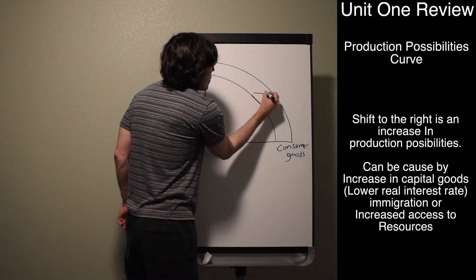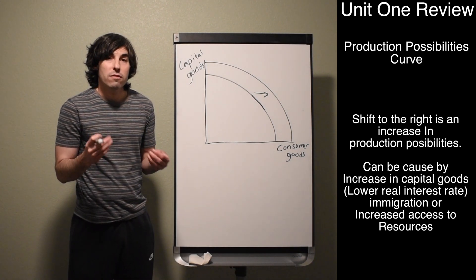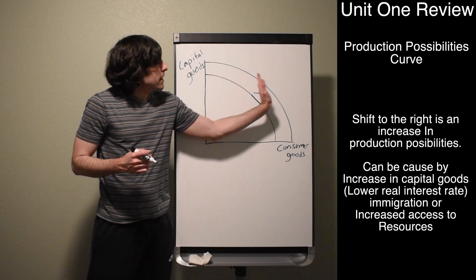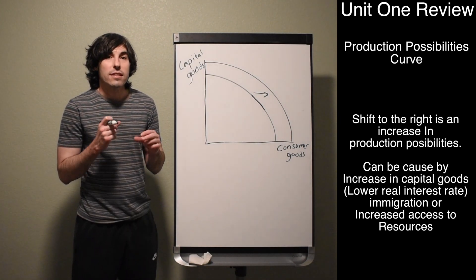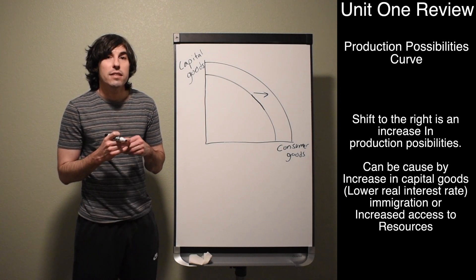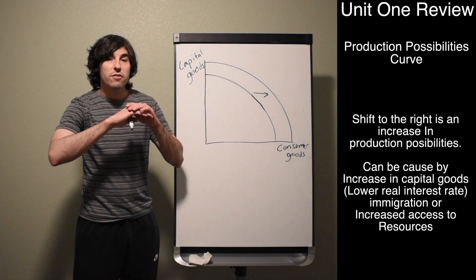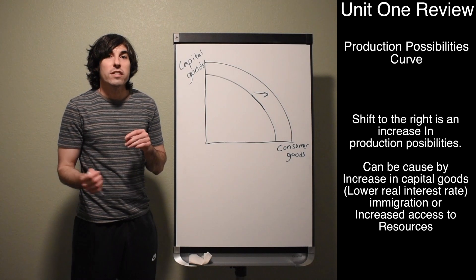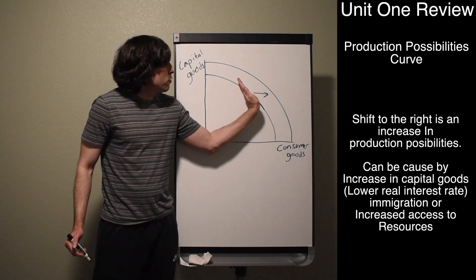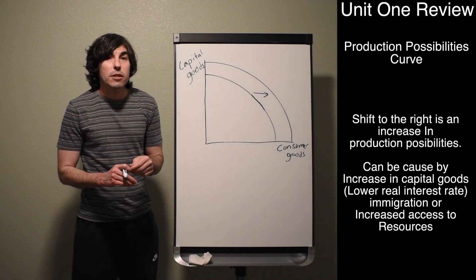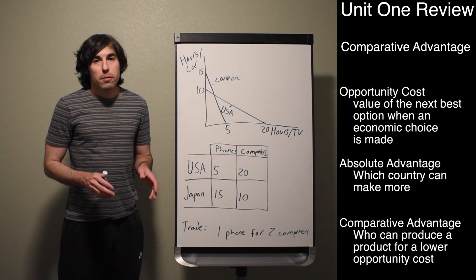The curve can also shift out to the right. An increase in the production possibility curve shifts it outward, and now even with the same number of people working at full employment, we can make even more stuff. The main thing you'll see on the AP test is an increase in capital goods, driven by a lower real interest rate. When the real interest rate is lower, businesses are more willing to invest and buy capital goods, leading to greater production in the future — that's economic growth.